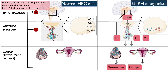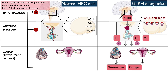GnRH antagonists have immediate onset action, preventing GnRH from binding to the GnRH receptor through competitive inhibition. This results in the inhibition of FSH and LH in the anterior pituitary gland and subsequent inhibition of sex hormones, such as estrogen and testosterone in the ovaries and testes.